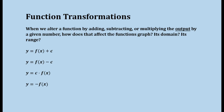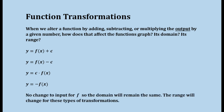In this video on function transformations, we're going to discuss what will happen when we alter a function by adding, subtracting, or multiplying the output by a given number. How does that affect its graph, its domain, its range? Notice that in each one of these situations we are only affecting the output — we're not changing what's going inside, so only the range will be affected. There's no change in the input, so the domain will remain the same for each one of these types of transformations.